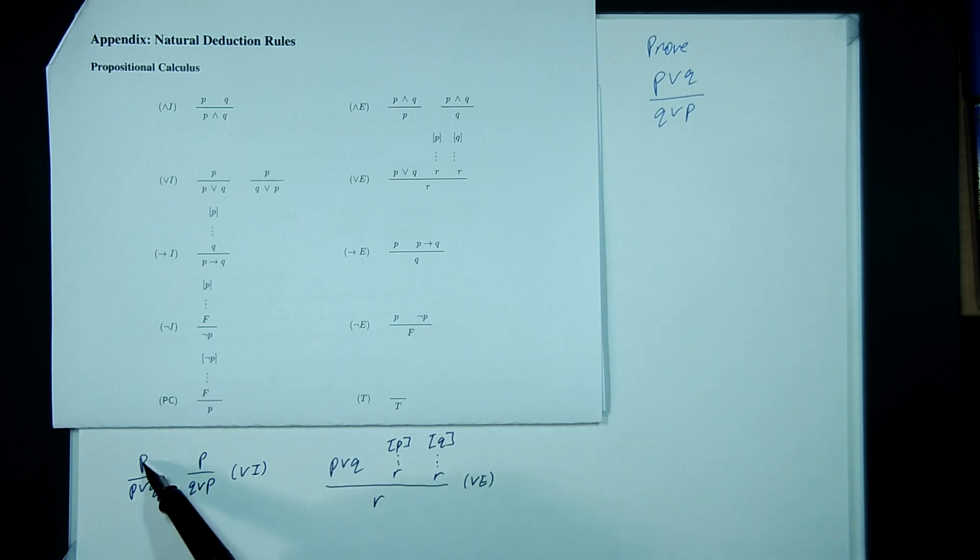So if you have P, you can write P or Q for literally any choice of Q. Separately, if you have P, you can write Q or P for literally any choice of Q. So that's OR introduction, which is pretty straightforward.